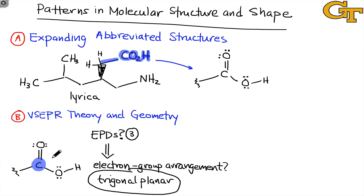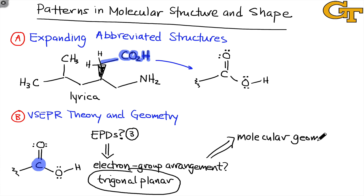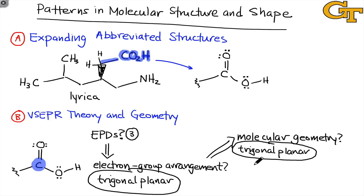The electron group arrangement doesn't pay attention to whether an electron domain is a bond or a lone pair. When we ask where the atoms are located in space — essentially ignoring the positions of lone pairs — we're asking about the molecular geometry of that central atom. Molecular geometry is simply where the atoms are in space based on the electron group arrangement and the number of non-bonding lone pairs on the central atom. This carbon has no non-bonding lone pairs, so its molecular geometry is also trigonal planar. In part B, you'll identify electron pair domains and infer electron group arrangements and molecular geometries for the substructures drawn in part A.